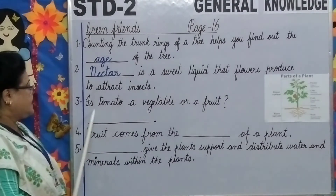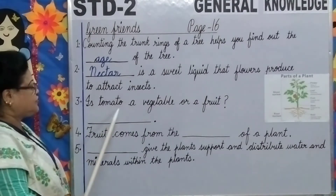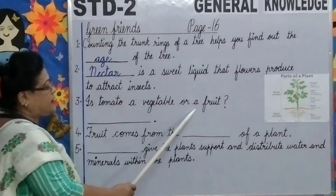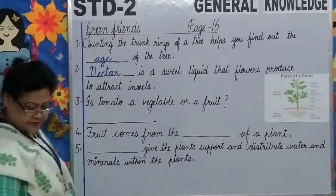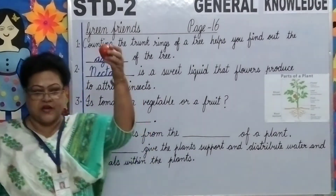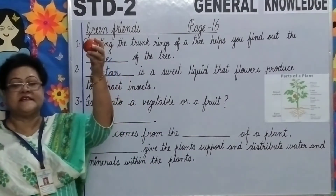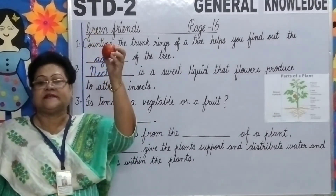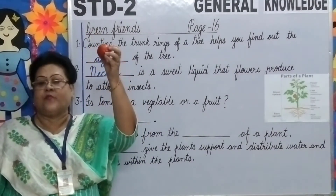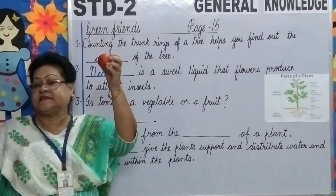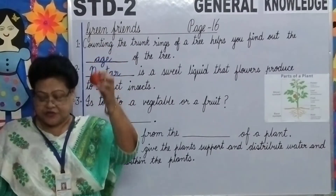Number 3: Is tomato a vegetable or a fruit? Look at this, children — this is a tomato. Is tomato a vegetable or a fruit? It is a fruit.